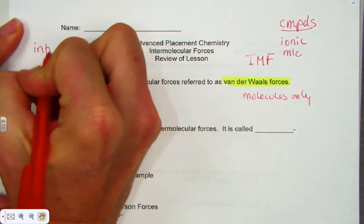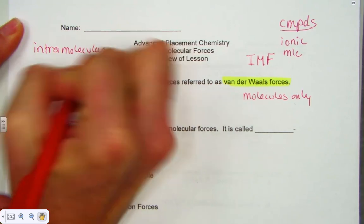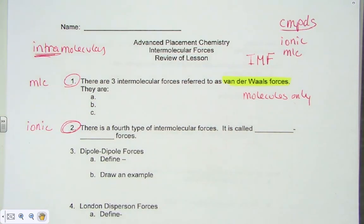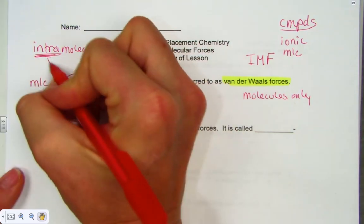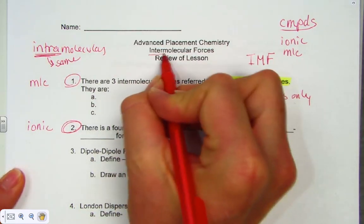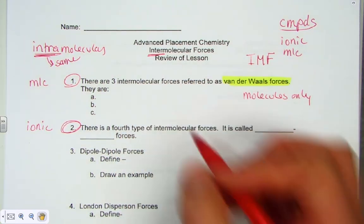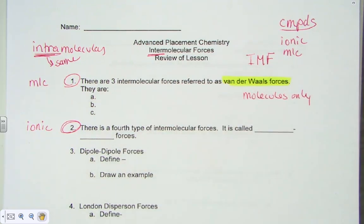There is another word: intramolecular attractions. Intramolecular means within the same molecule, whereas intermolecular means between different molecules. So intermolecular forces are the attractions keeping molecules together.